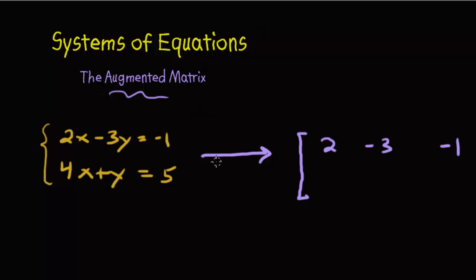There's our, well, part of our augmented matrix. Let's go ahead and finish it. So notice all I did was I took the 2 and put it there from the x, and I took the 3, or the negative 3, and then here's the negative 1, which I put over here.